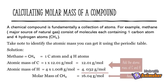The atomic mass of methane: natural gas consists of molecules containing one carbon atom and four hydrogen atoms. Take note: to identify the atomic mass, you can get it using the periodic table.